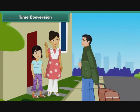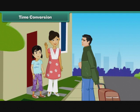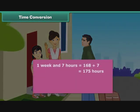Rashmi's father has left for Dehradun. He will be there for a week and 7 hours. Express his stay in hours. 1 week = 7 days; 1 day = 24 hours; so 7 days = 24 × 7 = 168 hours. 1 week and 7 hours = 168 + 7 = 175 hours. Rashmi's father will be in Dehradun for 175 hours.